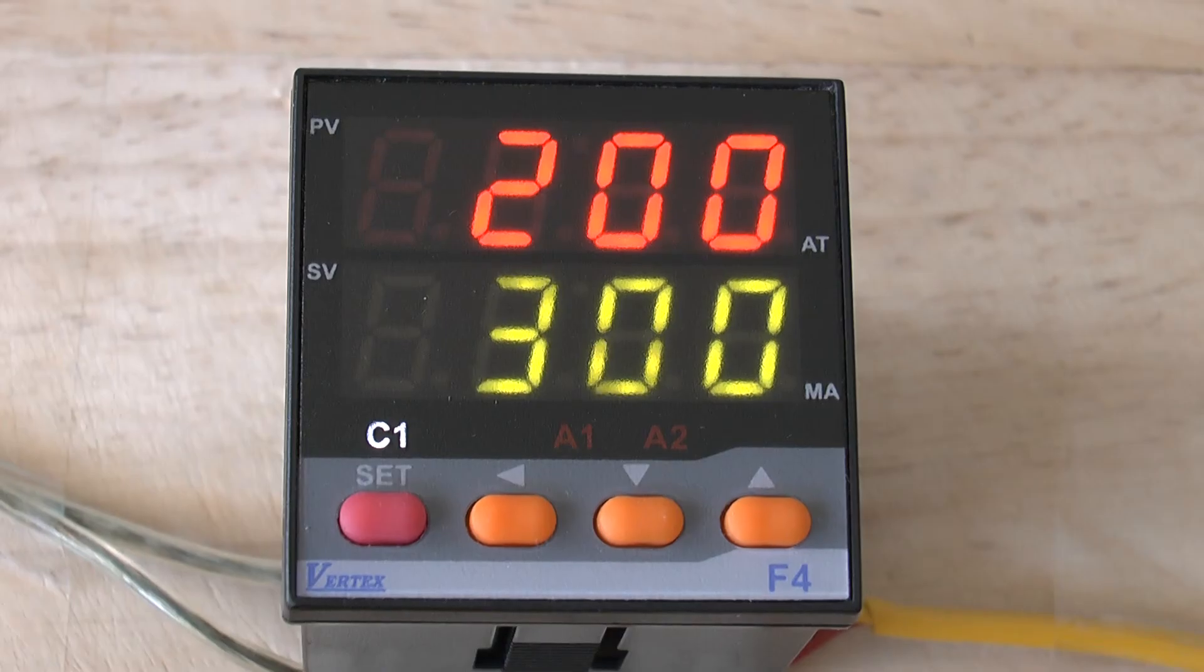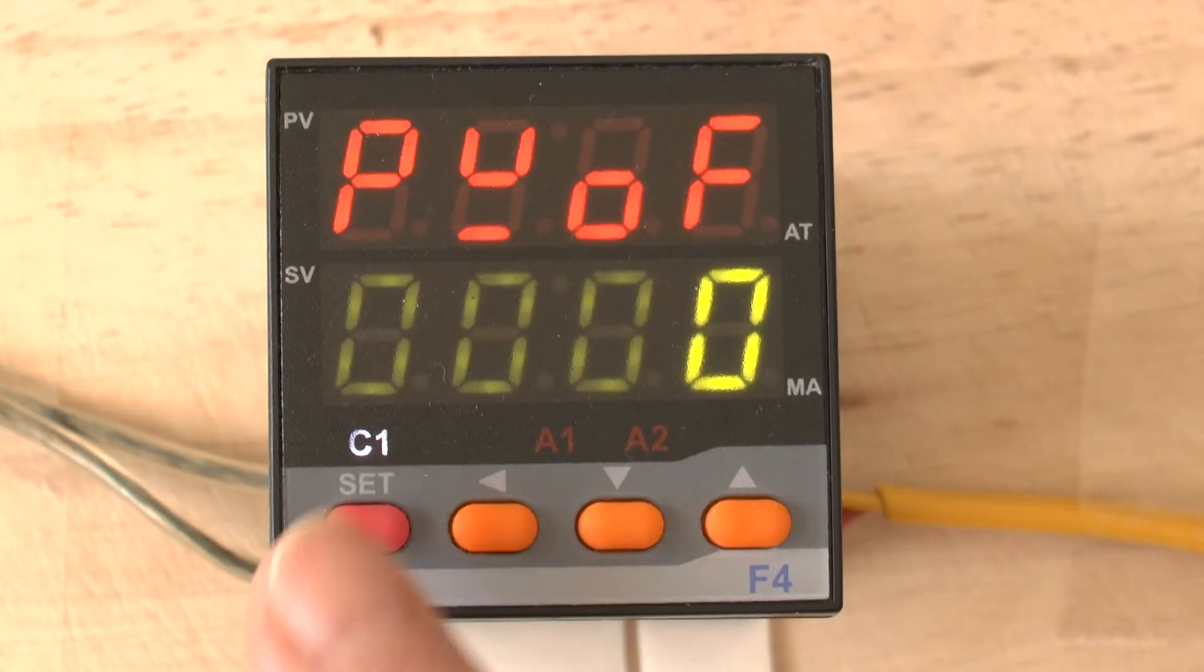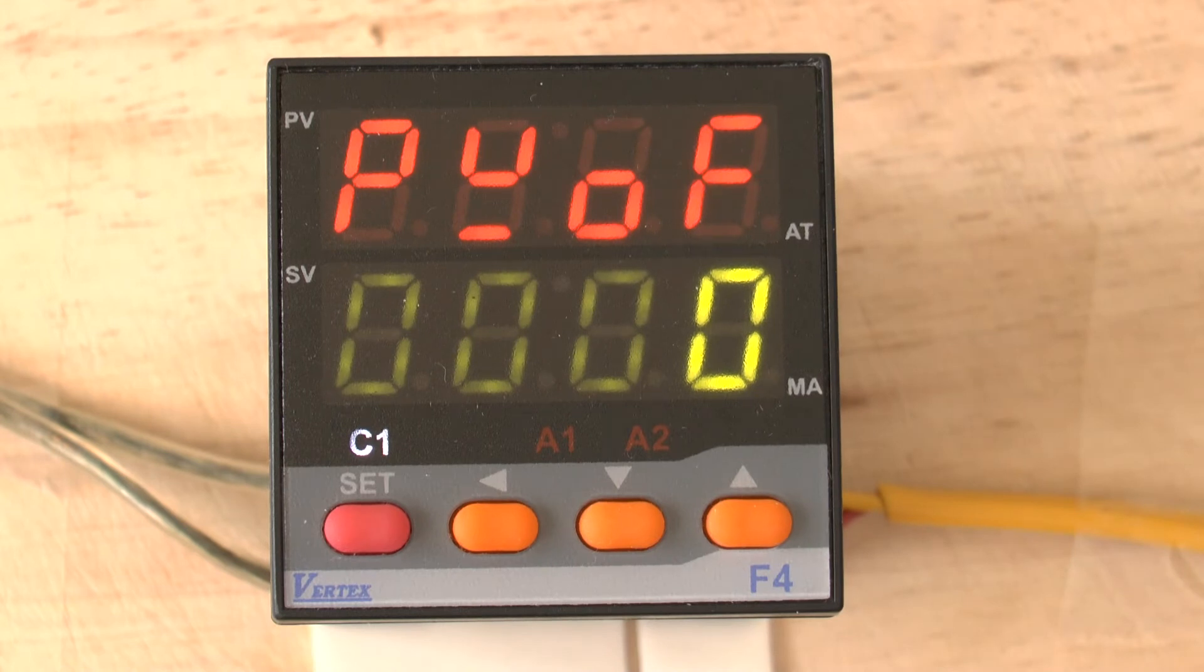In order to access the user level parameters, simply press the set button once. The first parameter is the PVOF process value offset parameter.